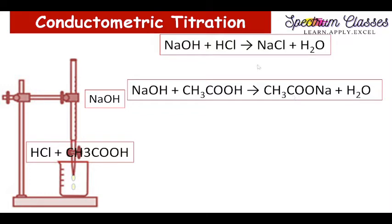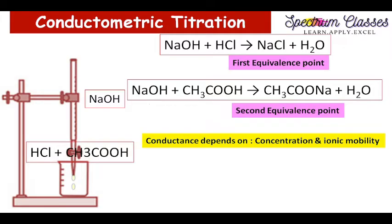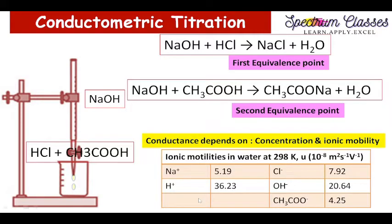In this manner we get two end points: the first is the equivalence point for HCl, and the second equivalence point for CH3COOH. Since conductance depends on the concentration and ionic mobility of the ions, I have summarized the ionic mobility values in water for Na+, Cl−, H+, OH−, and CH3COO− at 298 K as given in the literature. Now we are going to perform the lab experiment and then see the calculation part.